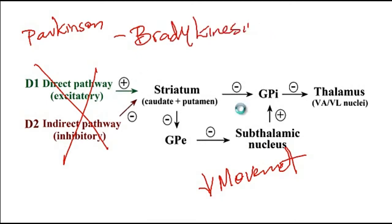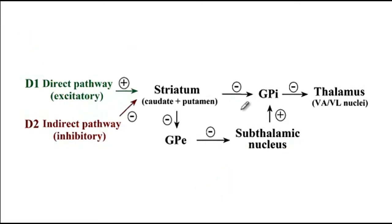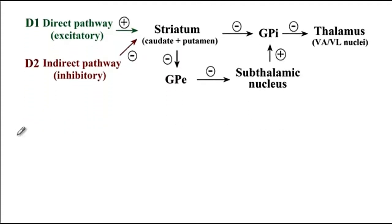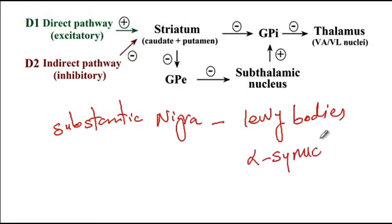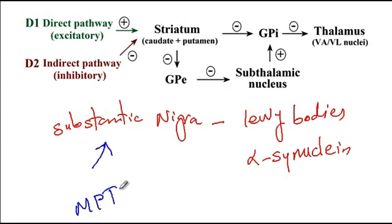Parkinson's disease is due to the loss of dopaminergic neurons in the substantia nigra, resulting from the accumulation of Lewy bodies, which are composed of the alpha-synuclein protein. There are also drugs that can cause destruction of the substantia nigra; one important example is MPTP, which stands for methylphenyl tetrahydropyridine.